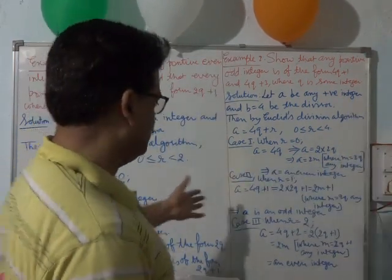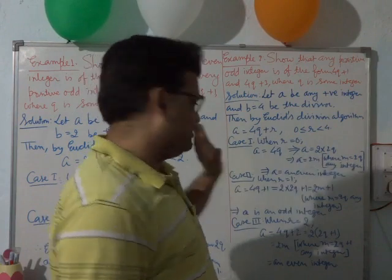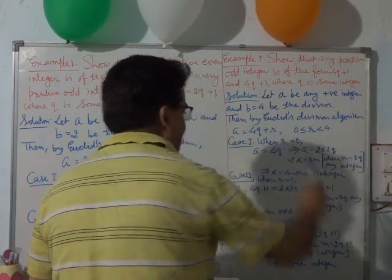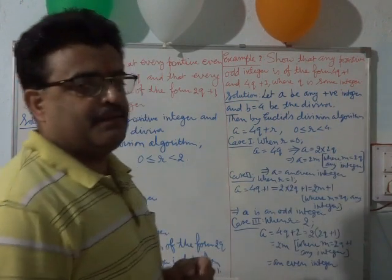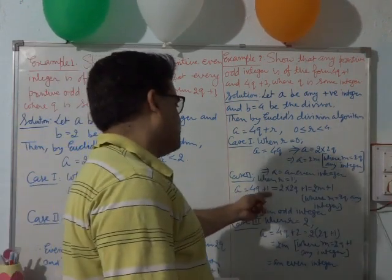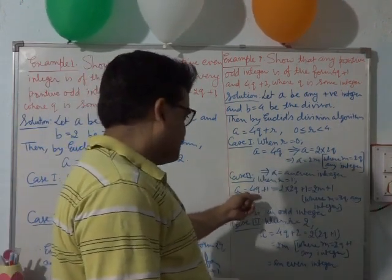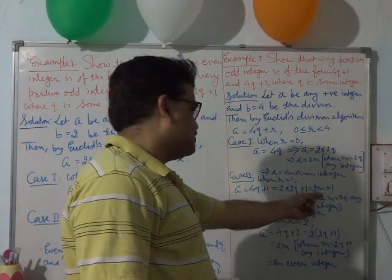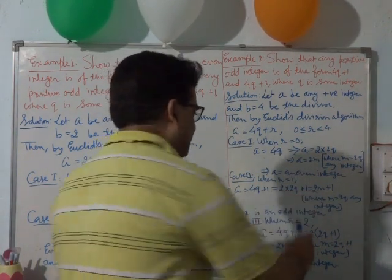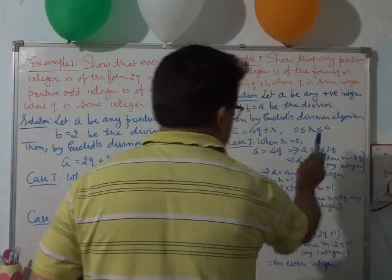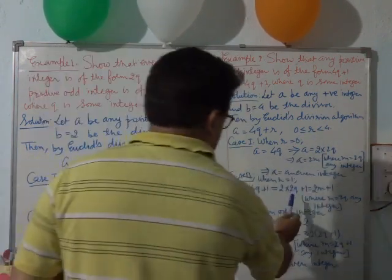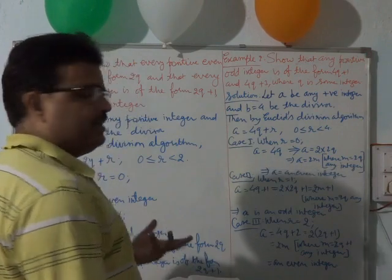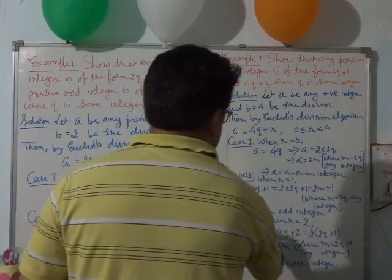In case 2, when R is equal to 1, placing 1 in place of R we get A equal to 4q plus 1. Now 4q can be written as 2 into 2q, so A is 2m plus 1, replacing 2q with m as before. This is of the form 2m plus 1 — not a multiple of 2 — and so A is an odd integer.